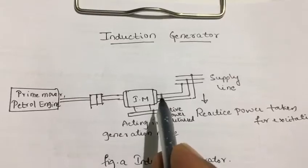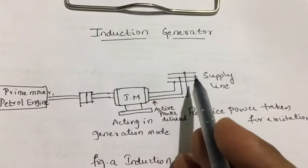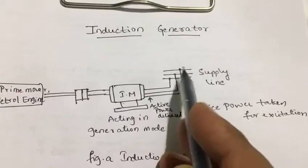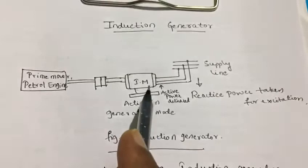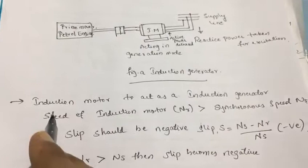The stator is connected to the bus bar, which is the three-phase power supply lines — three-phase power supply. The stator is directly connected to the power supply mains. Now let us see the conditions to make an induction motor act as a generator.